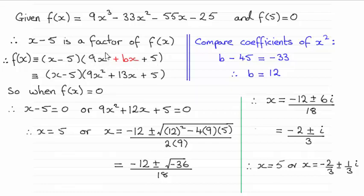I already know the x² term has to be 9x² because x times 9x² would give us 9x³. And for the constant at the end, it had to be 5 because minus 5 times 5 gives us minus 25.